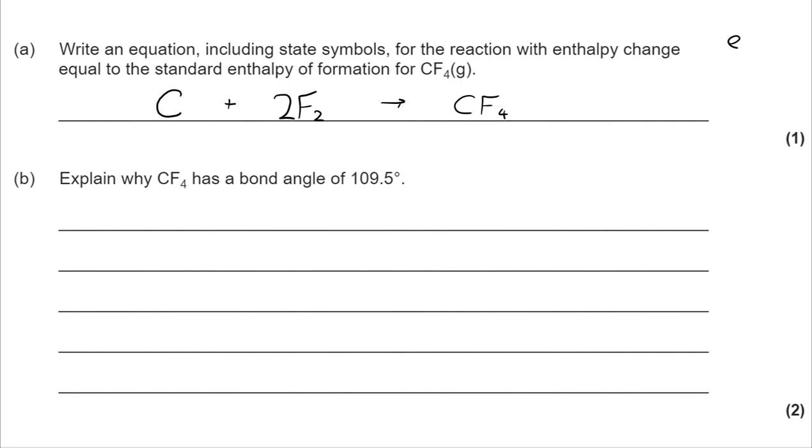From the definition of enthalpy of formation, we need to include the state symbols because it does say that it's the enthalpy of formation of one mole of a compound from its elements in their standard states at standard conditions. Carbon is a solid under standard conditions, fluorine is a gas, and CF₄ is a gas.